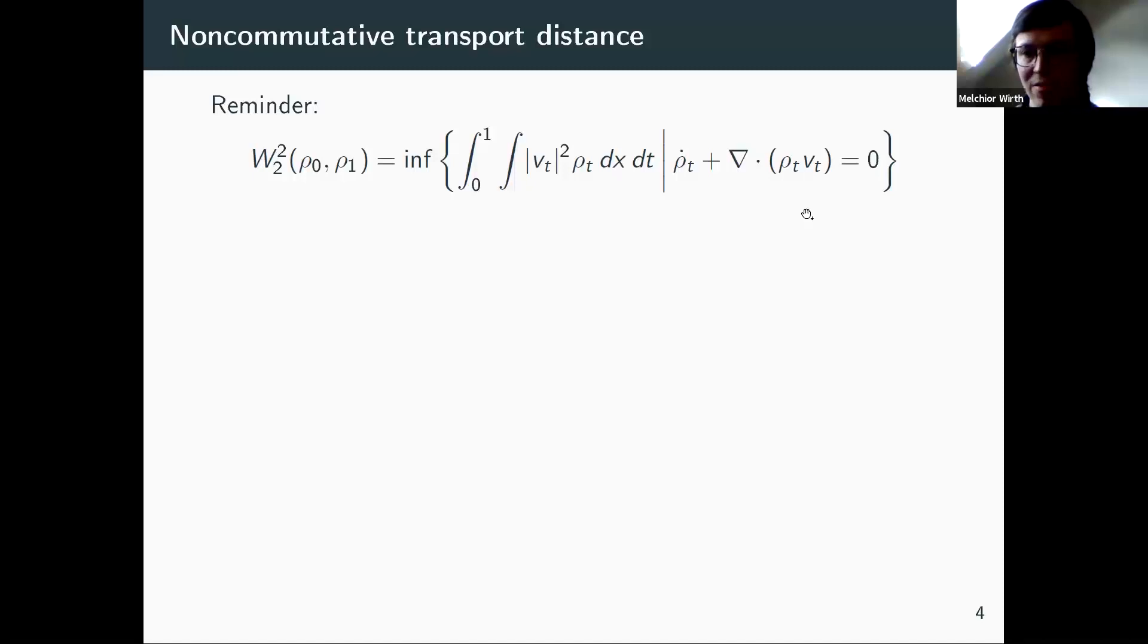Namely, here I multiply ρ_t with V_t. As I said, for Euclidean space, for tangent vector fields, there's only one way to do it. Now, in the non-commutative setting, I have two ways to do it. So either from the left or from the right. And here the important, the crucial insight by Carlen and Maas was that I shouldn't just take the left or the right multiplication.